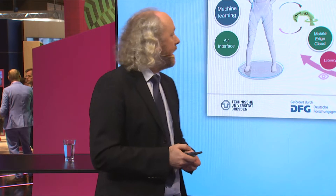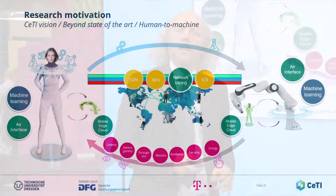Coming back to the tactile internet, the good news now is that these elements are heavily in use to make this dream possible. With network slicing we will have three slices: one slice for the video part, which means high data rate because video streams are large; for the tactile part we need low latency but also low data rate; and audio has mediocre requirements for both latency and bandwidth.